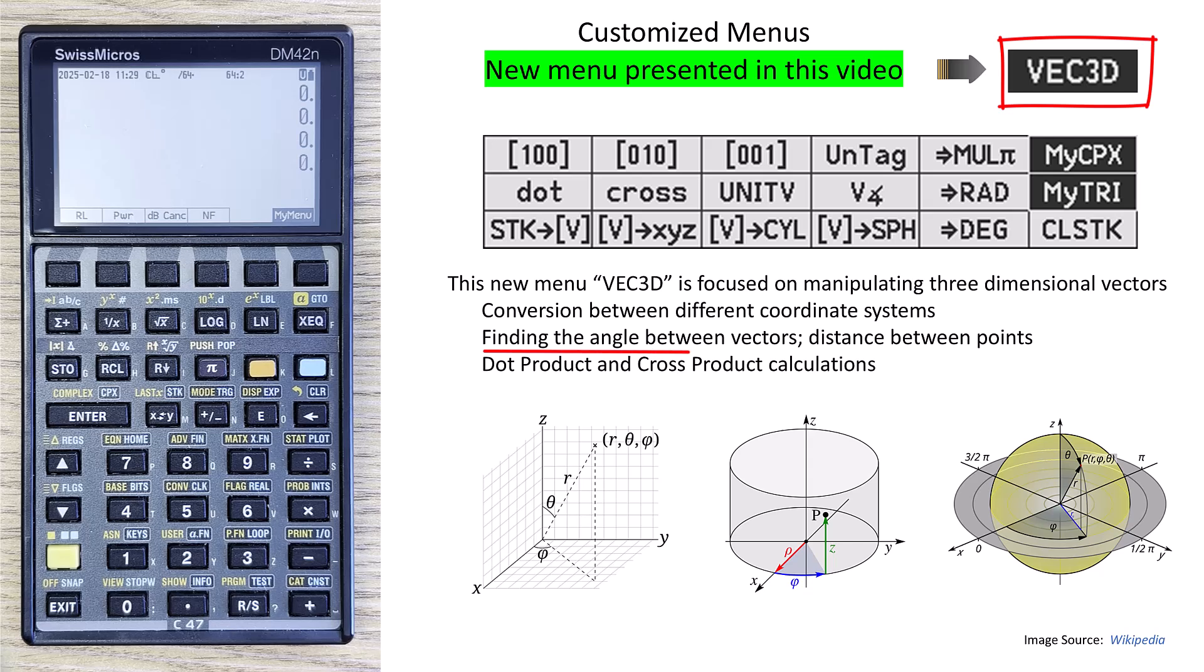To find the angle between vectors, to find the distance between points that a vector is pointing to, and of course, other manipulations like the dot product and cross product. I'm going to introduce that menu in this video.